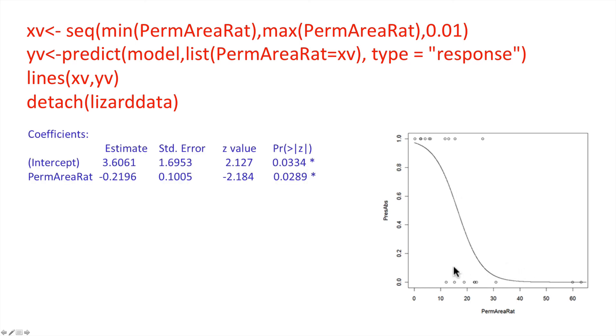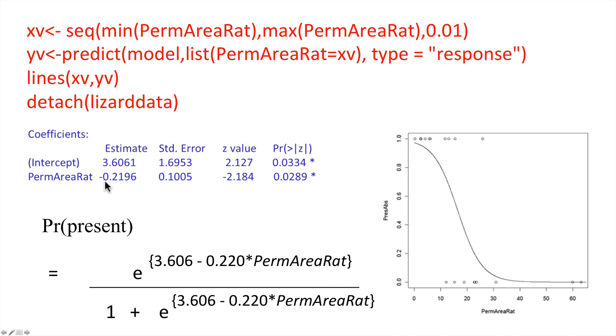Just to make sure that you understand exactly what's going on, recall that these were the coefficients of the fitted model here, in terms of the intercept and the gradient. We can now look at the probability of the lizards being present here, and how it's been described by this fitted model. Here we've got the intercept, there's the estimate of 3.606, and here we have the gradient of that relationship between the perimeter-to-area ratio and the probability present, albeit through this more complicated exponential function.